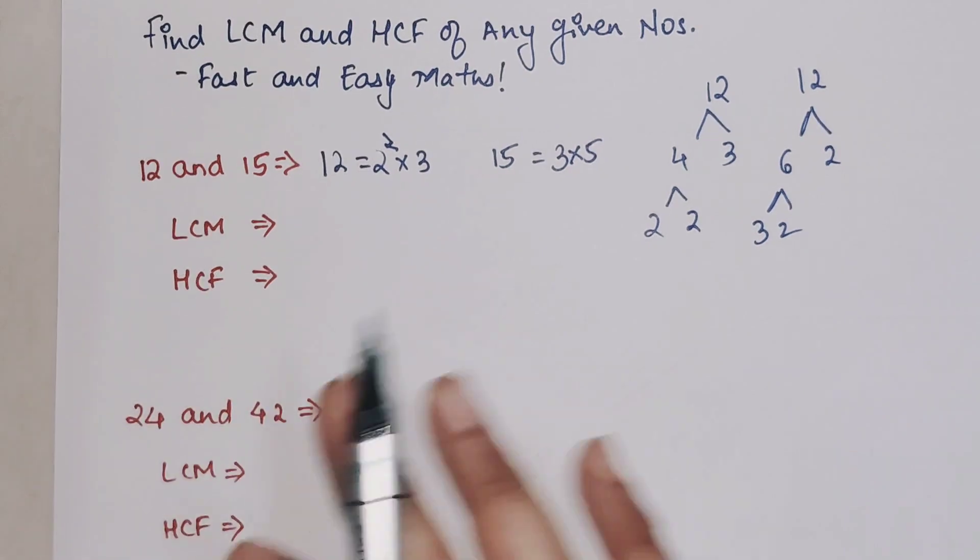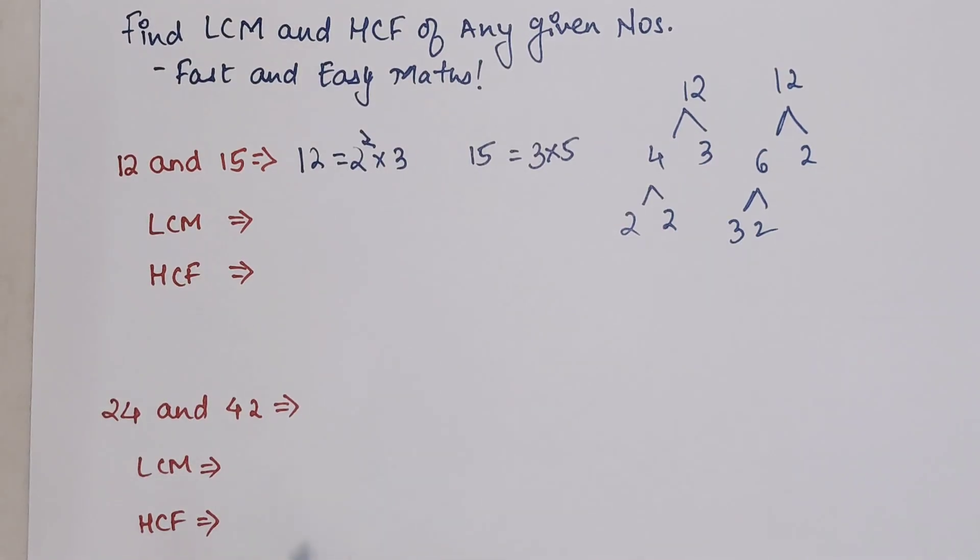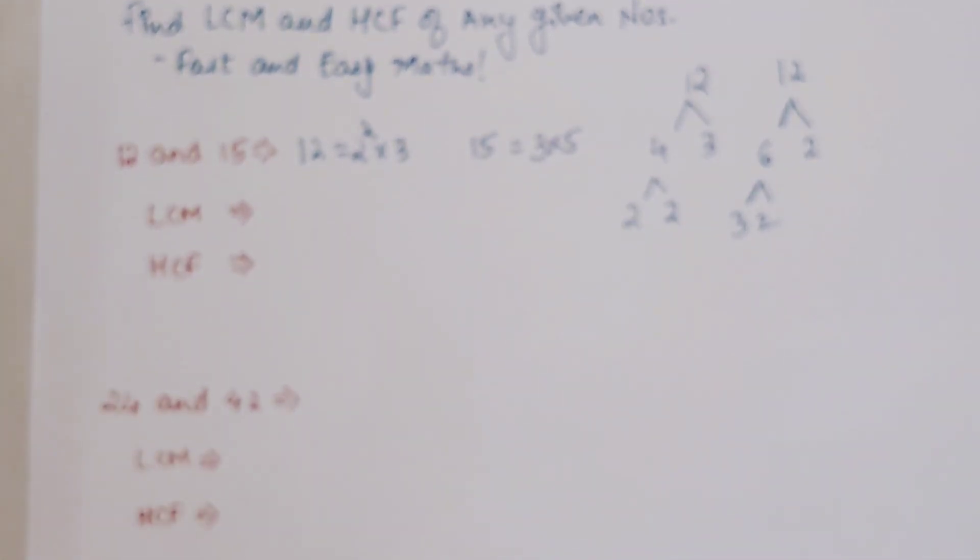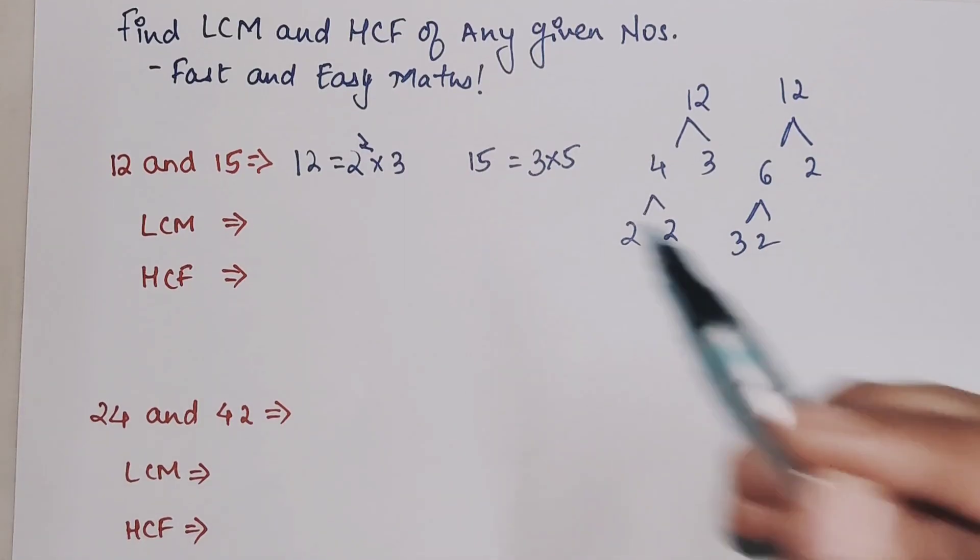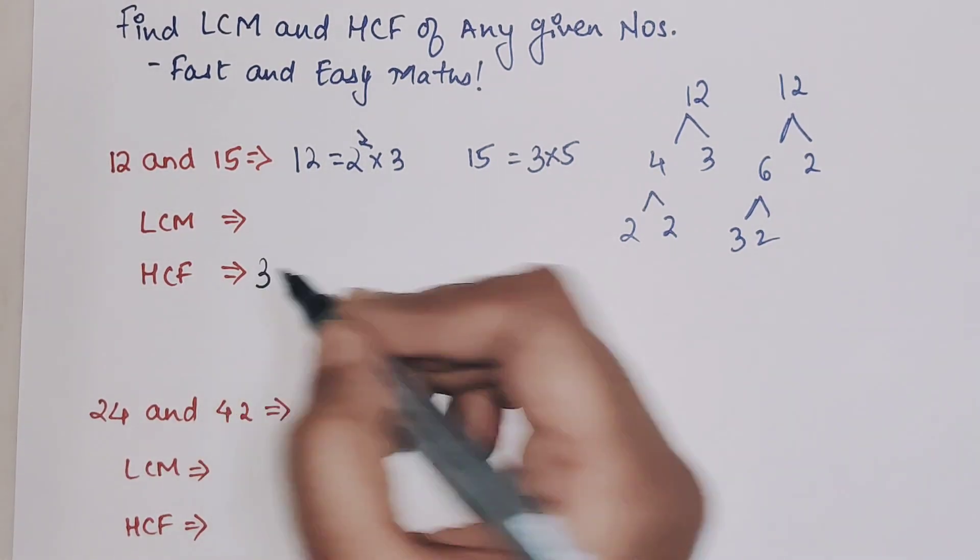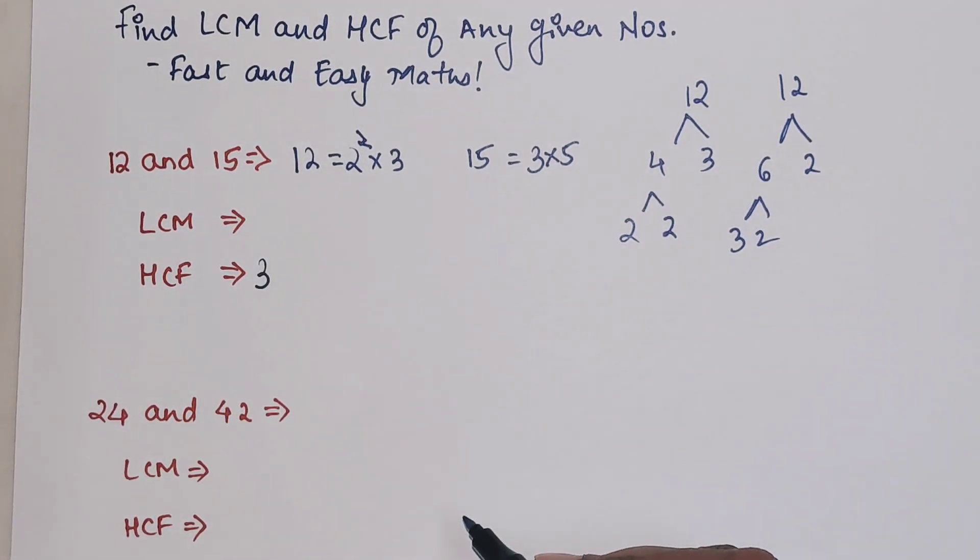Now please understand what is HCF. HCF is nothing but the highest common factor. So the number which is common between both of them is 3.